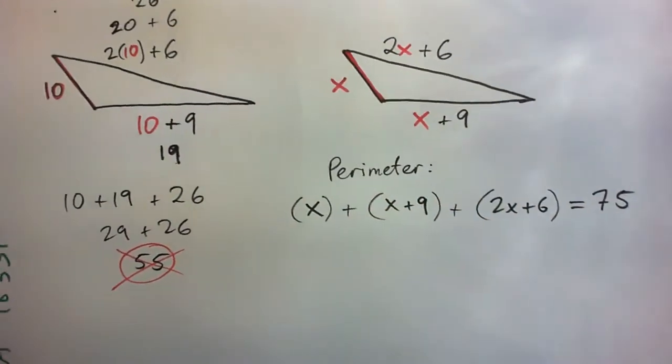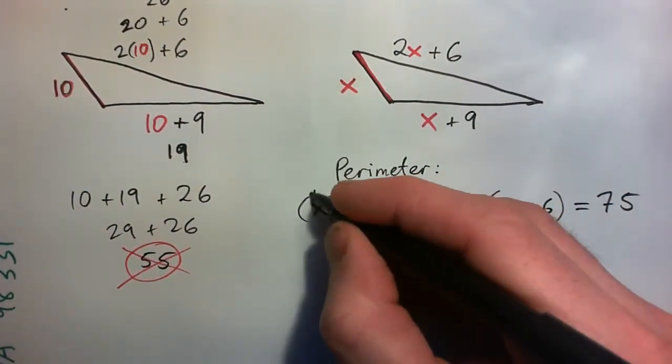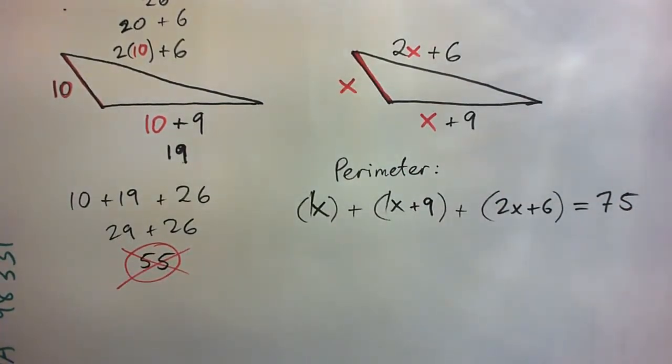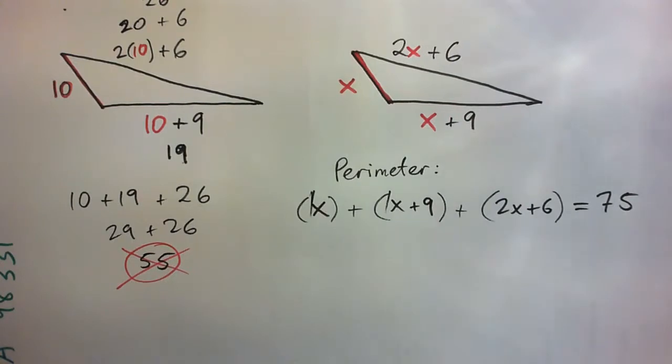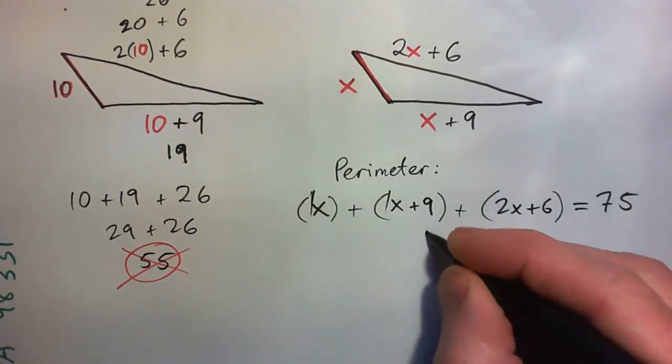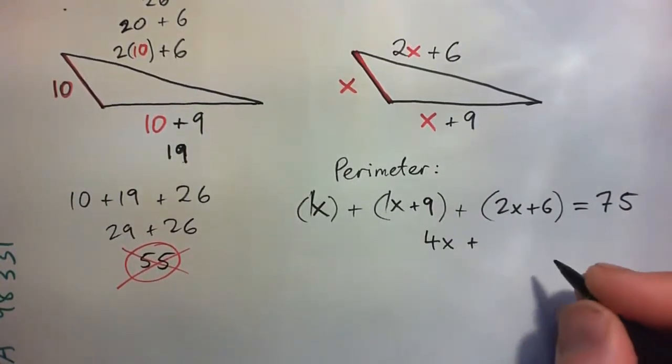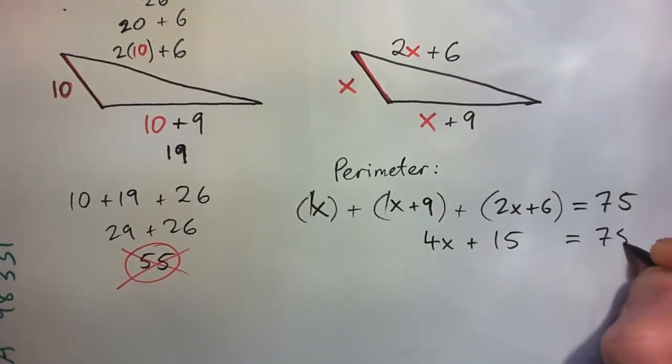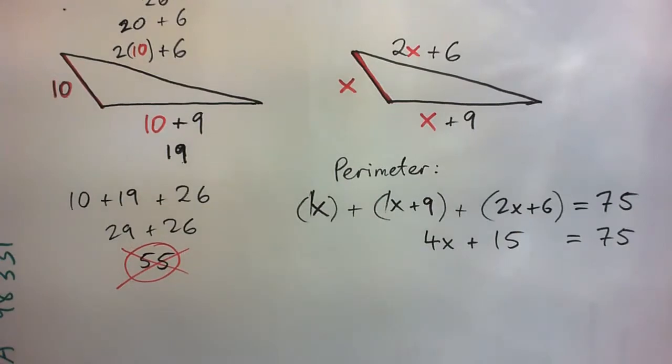So let's add them up now. Let's add like terms. So add the X's, add like terms now. One X plus one X plus two X makes what? Nine plus six. So now we have 4X plus 15 equals 75. That's a nice equation that we're all used to.